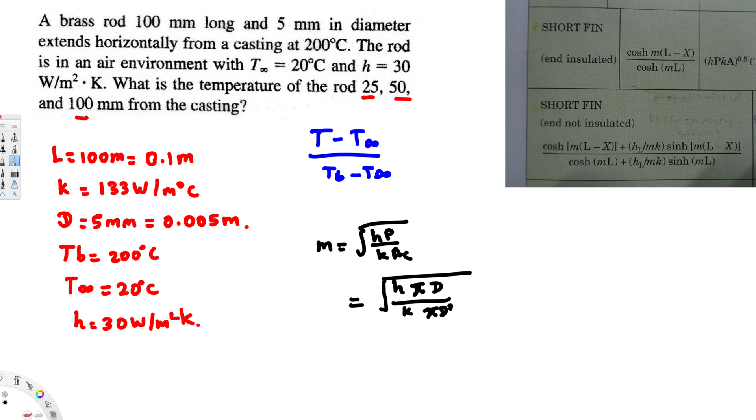If you notice, pi cancels, d squared and d cancels, and this 4 flips around. Finally we end up with square root of 4h over kd. This is the final equation we're going to use.